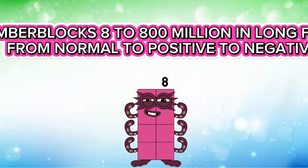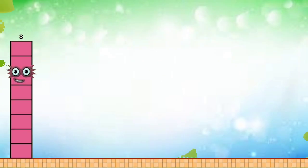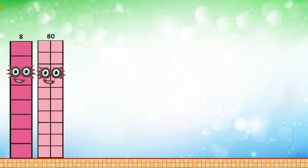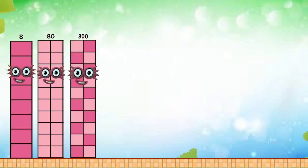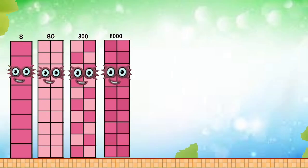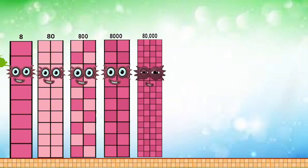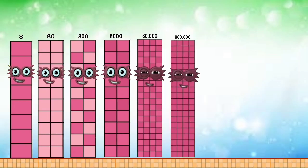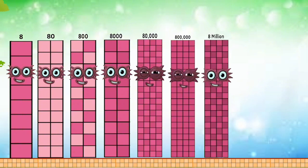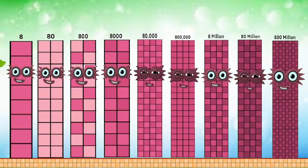Number blocks 8 to 800,000,000 in long form from normal to positive to negative. 80,000,000. 8,000. 80,000. 800,000. 8,000,000. 80,000,000. 800,000,000.